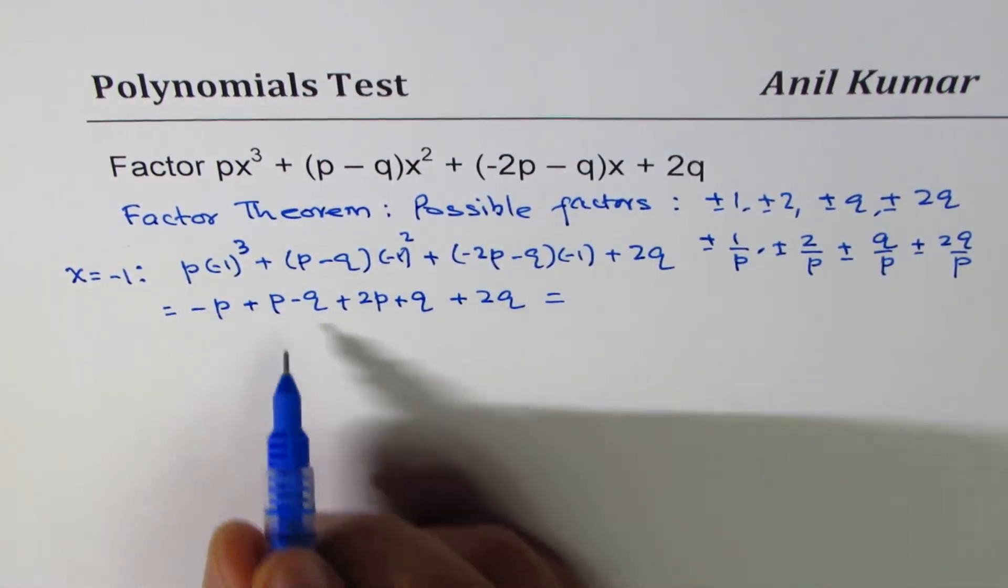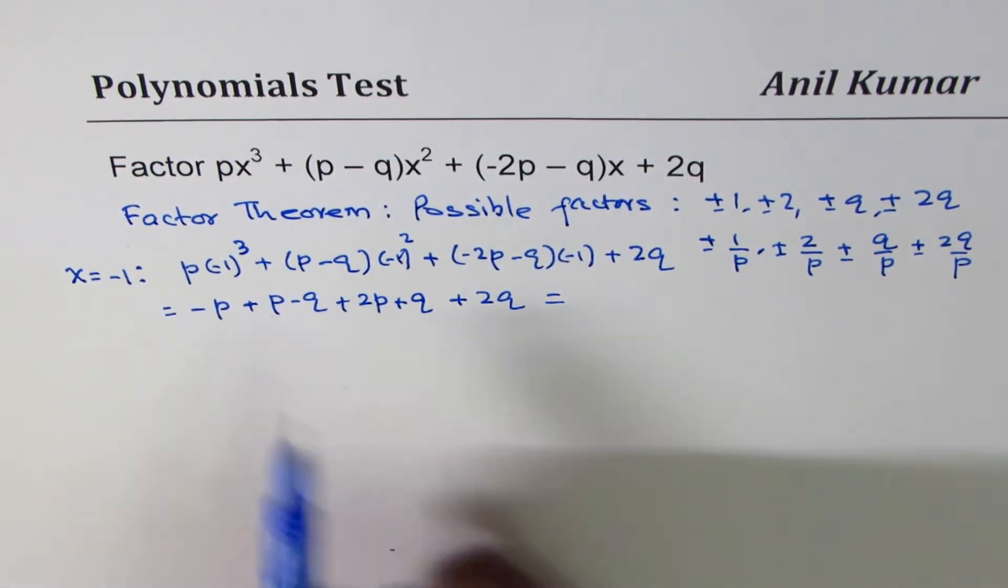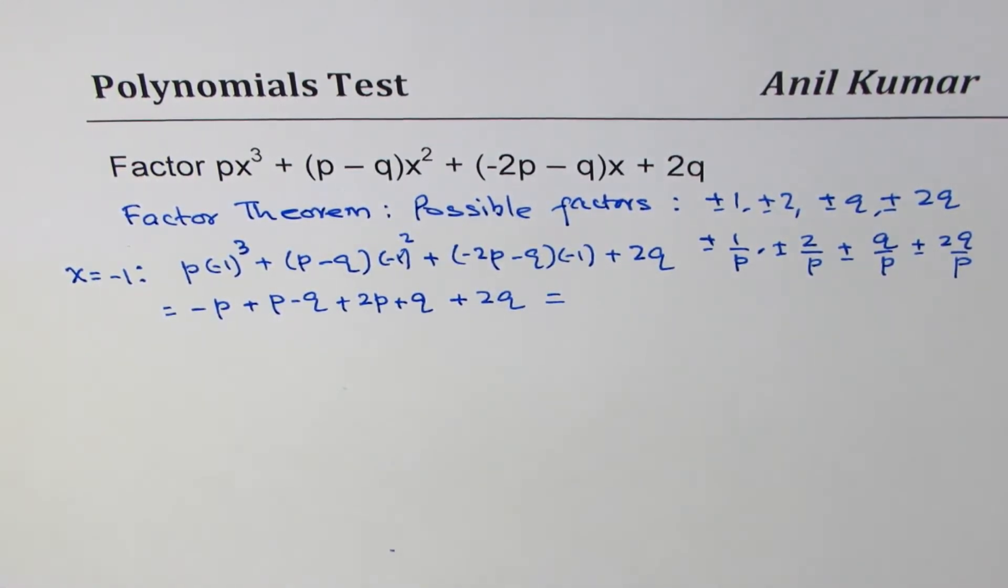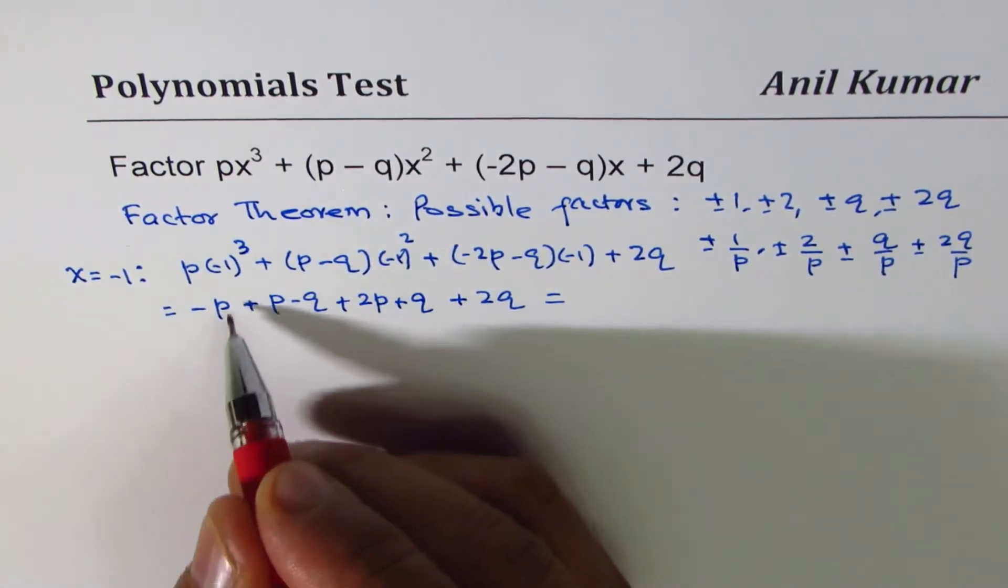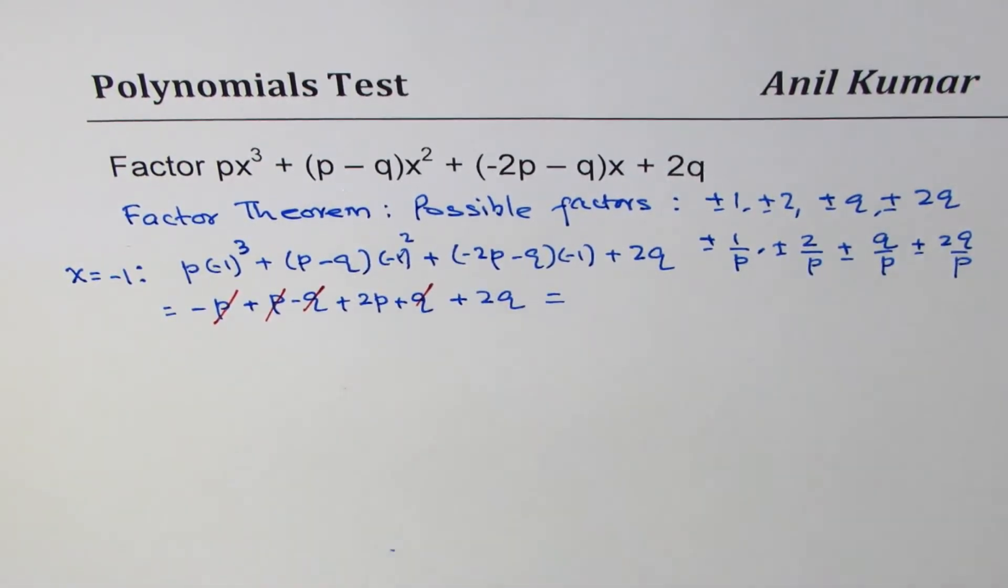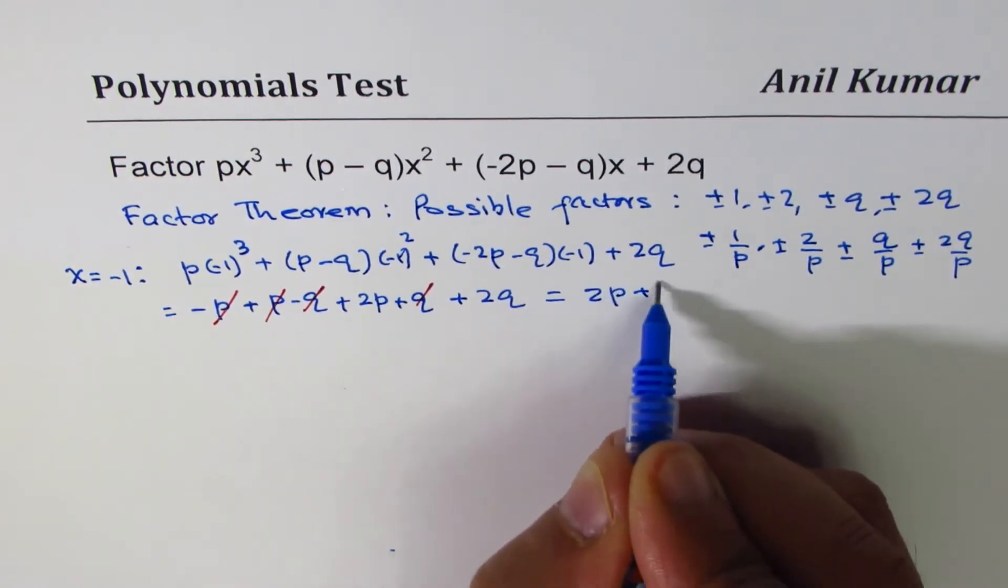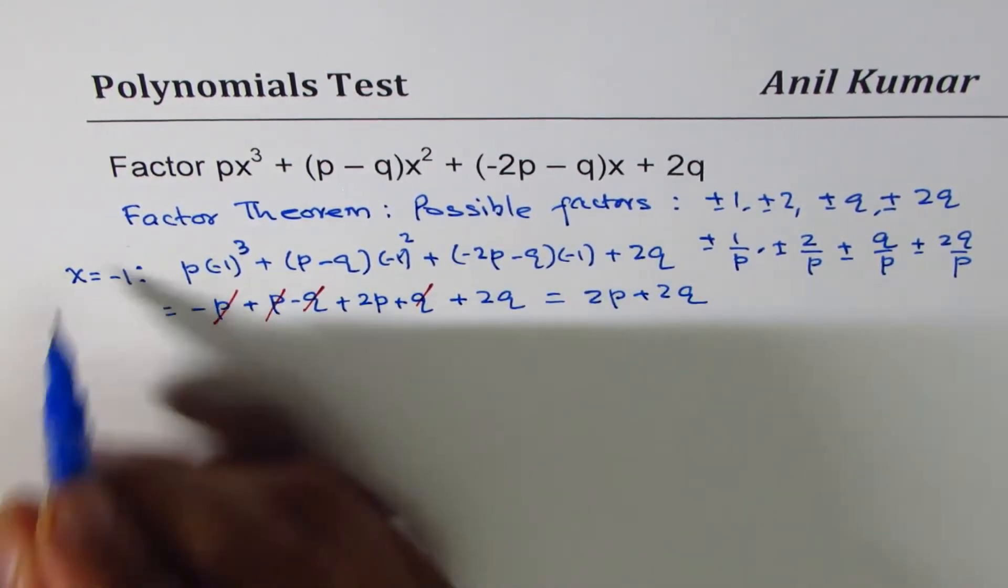Then we have +2q. And all these terms, if I check, -p + p cancel. 2q - q - q cancel. So we do not get 0, but we get 2p + 2q. So that didn't work.